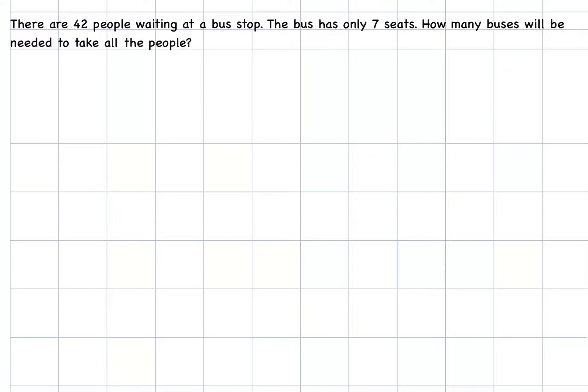You have to imagine there are 42 people waiting at a bus stop, and this bus can only sit 7 people. It only has 7 seats. So, how many buses will be needed to take all of those people to wherever they need to be? I'm reading my question, understanding what it's asking me to do. It's asking me to group those 42 people into 7s. Therefore, my number sentence is 42 divided by 7.